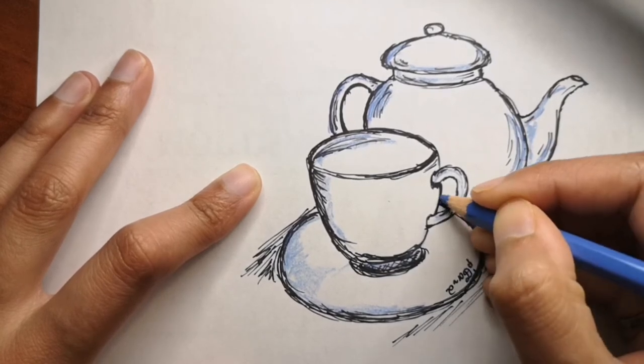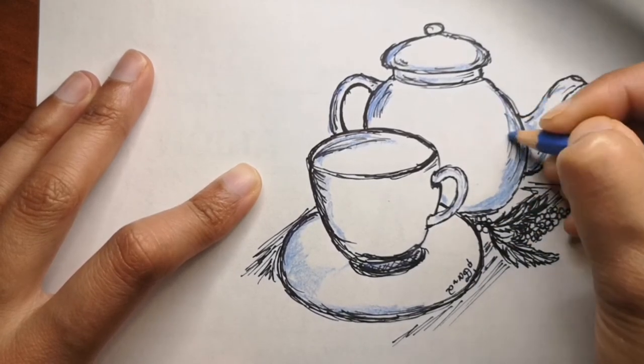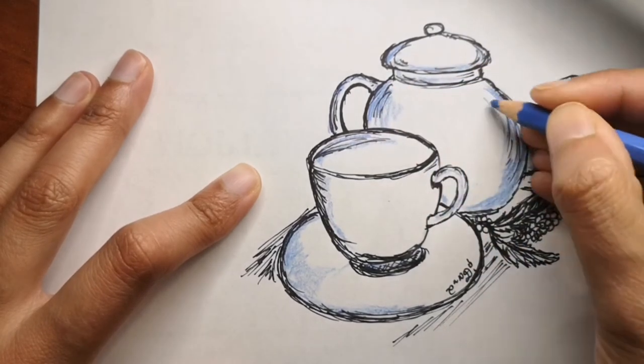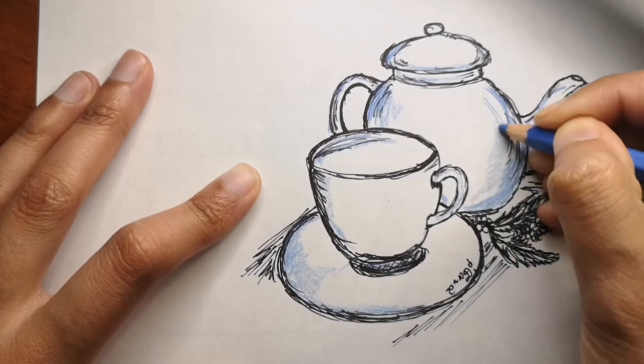We are done with the drawing part, so I'm going to color the teapot and the teacup. Usually they come in sets, so I wanted to color it the same color. I used blue.